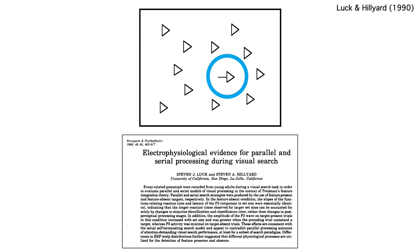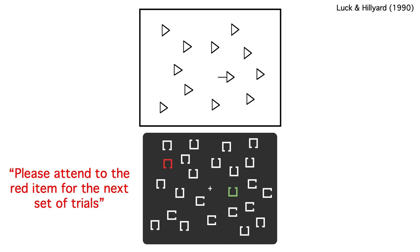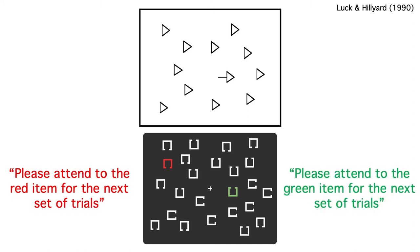We later ruled out that possibility, but it was a flaw in the original design. Now we typically use this kind of design. We have a red item on one side and a green item on the other. Subjects are instructed to attend to the red item for some trial blocks and to the green item for others. The stimulus positions vary randomly from trial to trial, so subjects can't predict which side will contain the target before the array is presented.